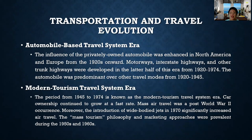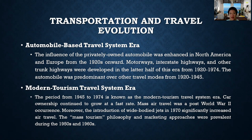Next is the automobile-based travel system era. The influence of the privately owned automobile was enhanced in North America and Europe from the 1920s onward. Motorways, interstate highways, and other trunk highways were developed in the latter half of this era from 1920 to 1974. The automobile was predominant over other travel modes from 1920 to 1945, and most people were already having car rental activities.